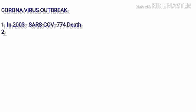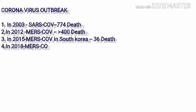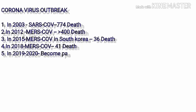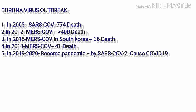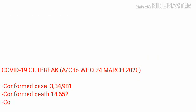Coronavirus outbreaks: In 2003, SARS-CoV led to 774 deaths. In 2012, MERS-CoV led to more than 400 deaths. In 2015, MERS-CoV in South Korea led to 36 deaths. In 2018, MERS-CoV led to 41 deaths. In 2019 and 2020, SARS-CoV-2 became a pandemic, causing COVID-19.